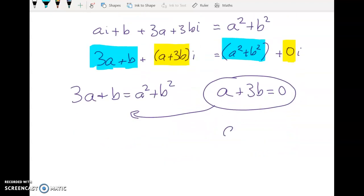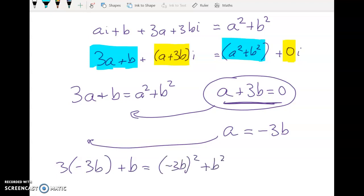So working with this one I get this one here. The imaginary part a is equal to negative 3b. And substituting that over to here gives me 3 times negative 3b plus b is equal to negative 3b squared plus b squared.